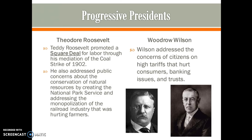Two progressive presidents are Theodore Roosevelt and Woodrow Wilson. Theodore Roosevelt promoted a square deal for labor, having mediated the coal strike of 1902, calling it a square deal for both business leaders and workers. He addressed public concerns about conservation of natural resources and is the main president who created the National Park Service. He also addressed monopolies in the railroad industry. Wilson addressed concerns about high tariffs — taxes on imported goods — as well as trust and banking issues, but after World War I began, his main concern became keeping the American people safe.